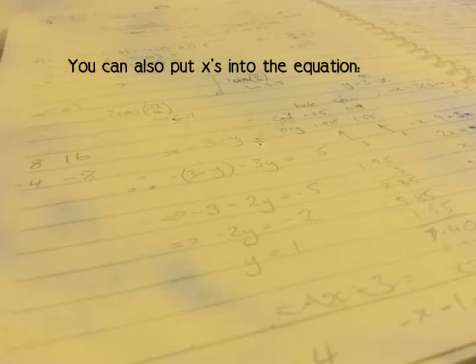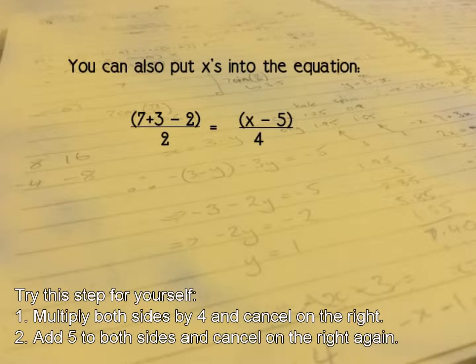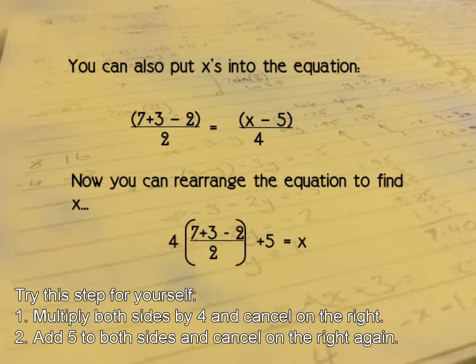So you can put x's into an equation. And here we have a very similar equation to our first example, except we have an x on the right hand side, a number we do not know. Suppose we want to know that number. What is x? Well, we simply do the same thing as in our last example. We multiply both sides by 4, and the 4s on the right hand side will cancel. And then we add 5 to both sides, and the 5s on the right hand side will cancel. And if we do that, we rearrange our equation, and we get something like this.